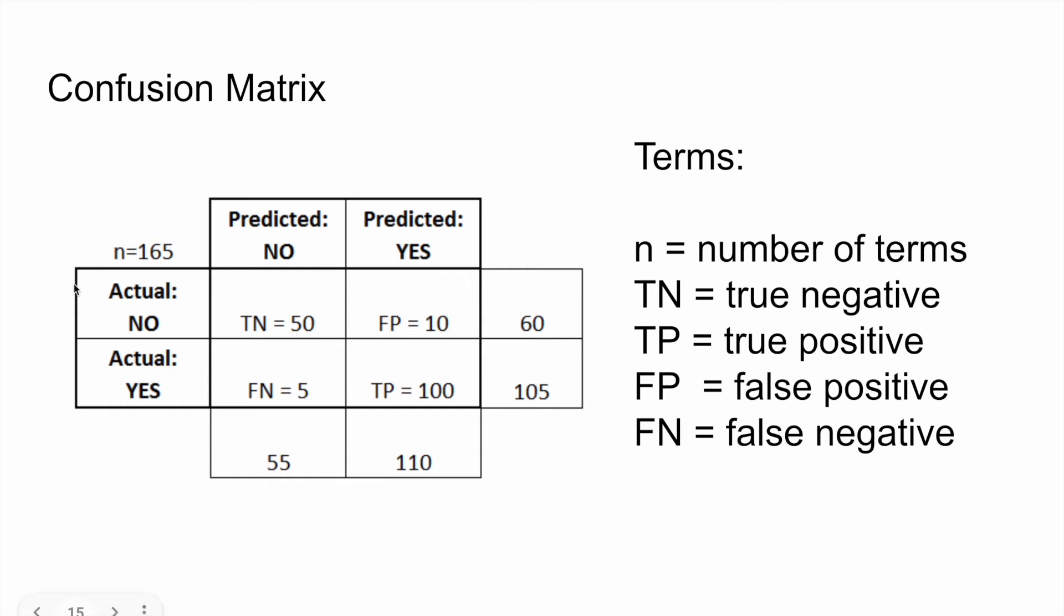So, first, n. This n value, commonly seen in math, just signifies the number of terms that our model has predicted, right? So, as we can see here in this example, 165. That all that means is that our model has predicted 165 values, which are being split up evenly among this confusion matrix. So, let's get into it.